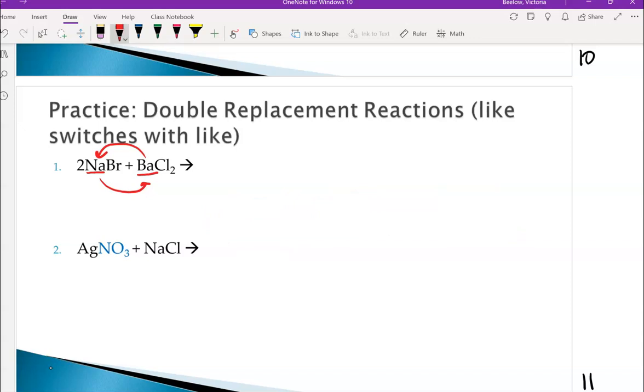So let's just start by writing what elements are together. Since these two elements are switching spots, the Na is going to now be with the Cl. So just write the two elements that go together. Do not just copy over, that is absolutely wrong.